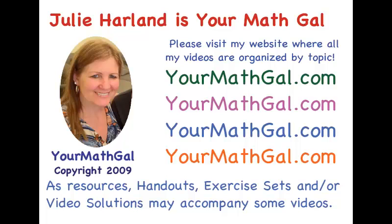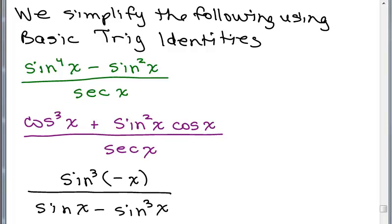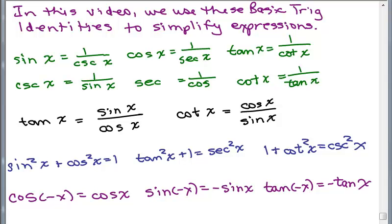This is YourMathGal, Julie Harland. Please visit my website at yourmathgal.com where all of my videos are organized by topic. We simplify the following expressions using the basic trig identities. We've now covered the basic identities: the reciprocal identities, tangent and cotangent in terms of sine and cosine, the three Pythagorean identities, and the even and odd identities. We're going to use these basic trig identities to simplify some expressions.